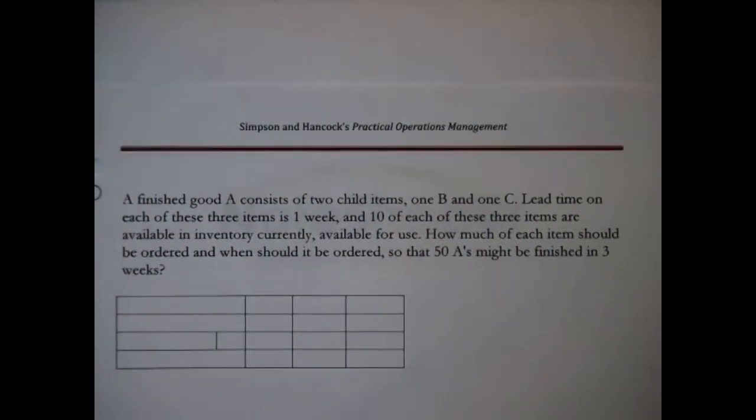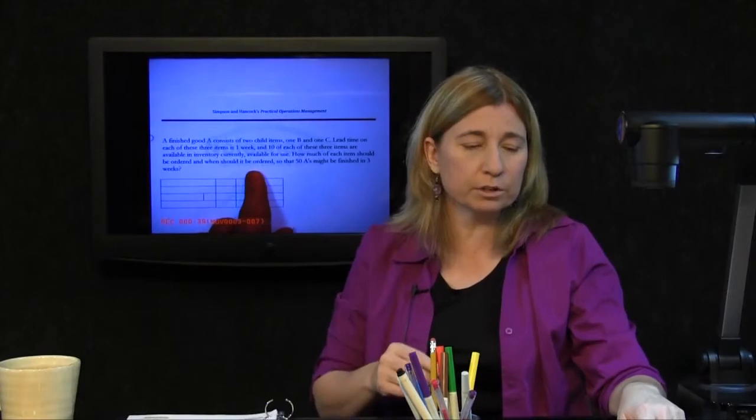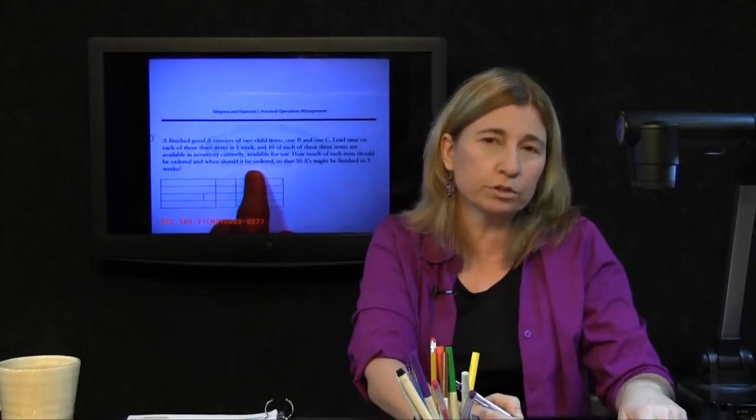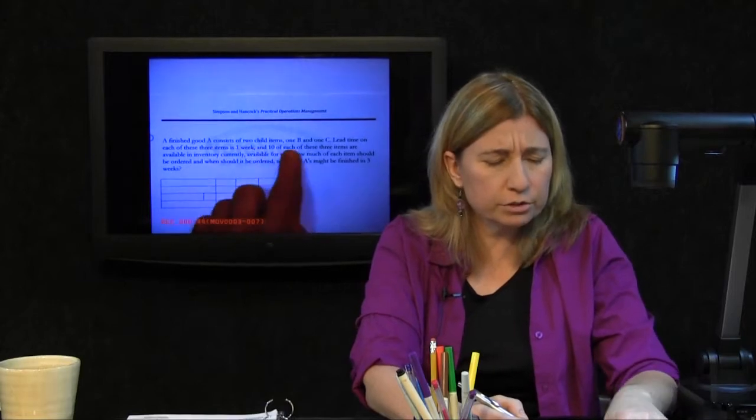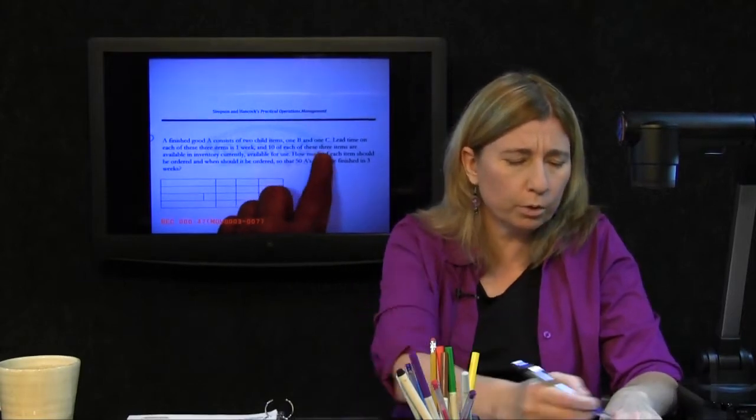This problem though challenges us in that MRP problems are usually large but not necessarily. This particular problem is a full MRP problem. A finished good A consists of two child items, one B and one C.